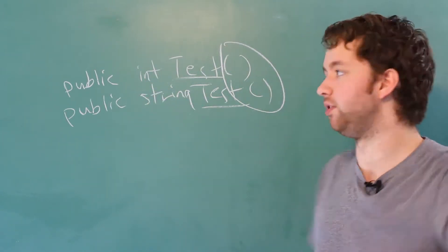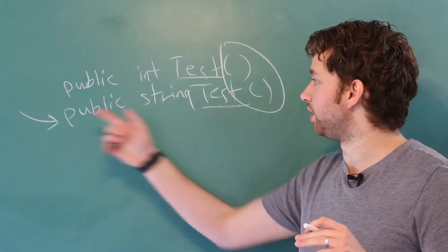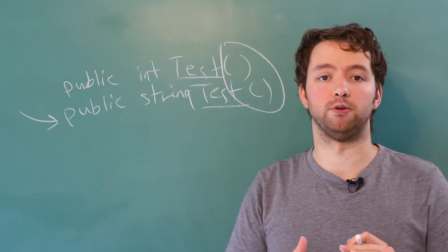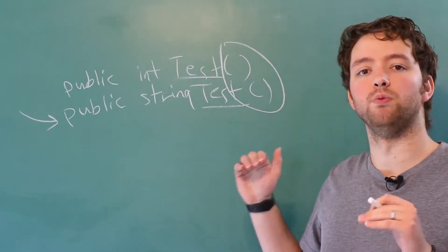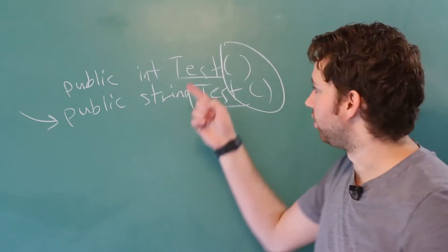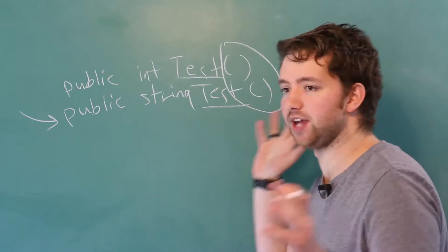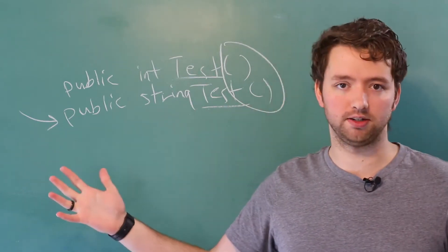These are not overloads. This one is going to cause a compiling error because the return type does not count when it comes to method overloading. So if you need to do this, what you would have to do is you'd actually have to make two methods with different names. You could have test that returns an integer and then test two, which returns a string or whatever you wanted to call it.